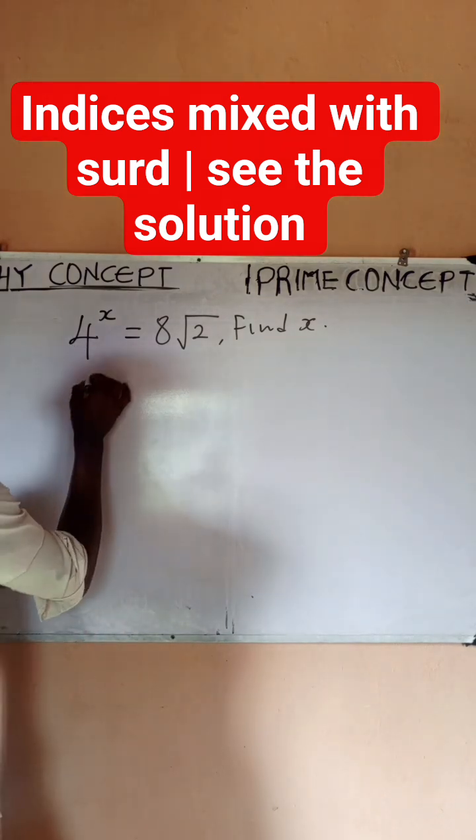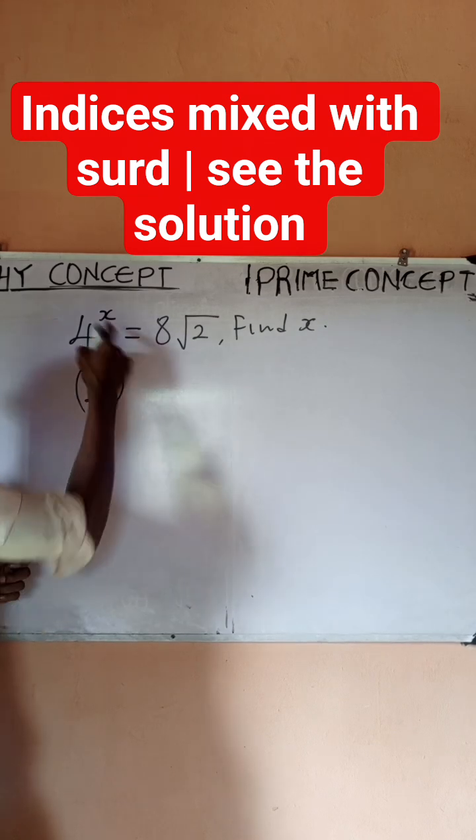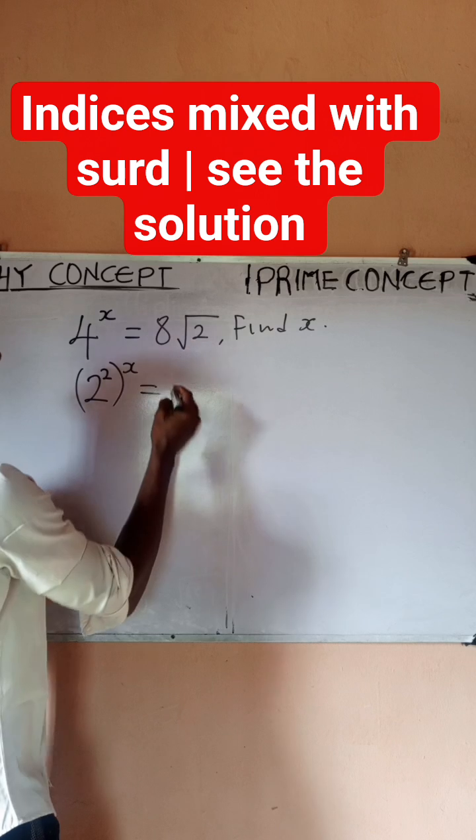So four can be written as two to power two, then I have my x outside. Then it can be written as two to power three.